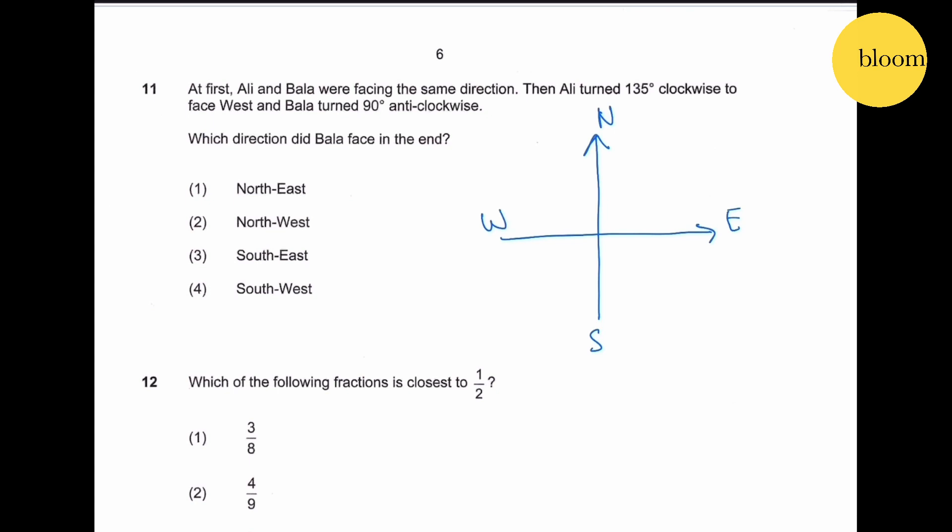So Ali turned 135 degree clockwise to face the west, so let's turn back 135 degrees. We know this is 90 degrees and half of this is 45 degree. We add them, will be 135. Original facing would be south east because Ali turned 135 to face the west. On the other hand, Bala turned 90 degree to face northeast. So one is the answer.